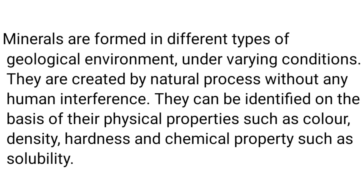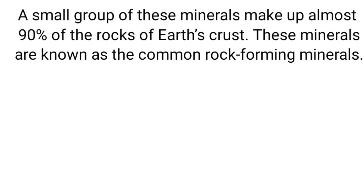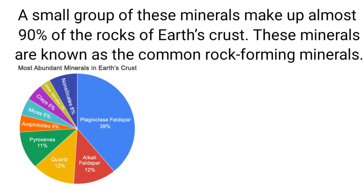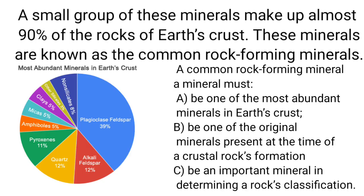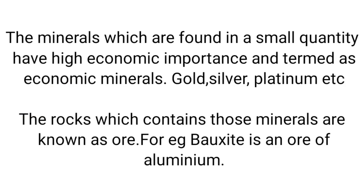Among all minerals, a small group makes up about 90 percent of the earth's crust, known as rock-forming minerals — there are 10 important minerals. A rock-forming mineral should have the following characteristics: it should be abundantly found in the earth's crust, it should be an original mineral present at the time of rock formation, and it should be an important mineral determining the classification of rocks.